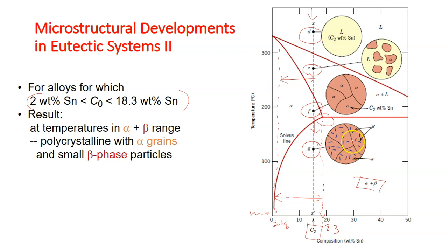So at point G, you can see that there are formation of beta phase particles, tiny, tiny bits of beta phase particles, this blue line here, together with the alpha solid or alpha grains. So the red color is alpha grains and the blue color here are the beta phase particles.